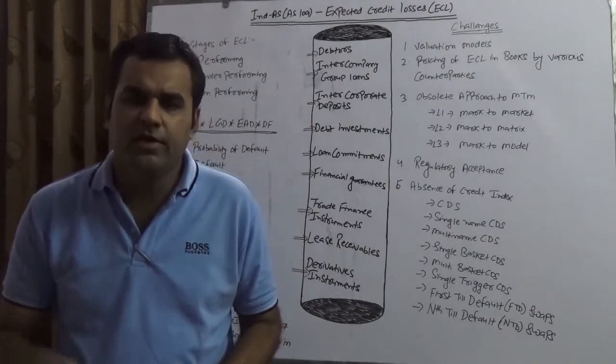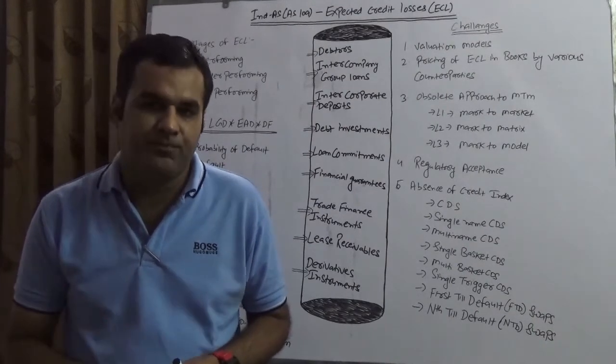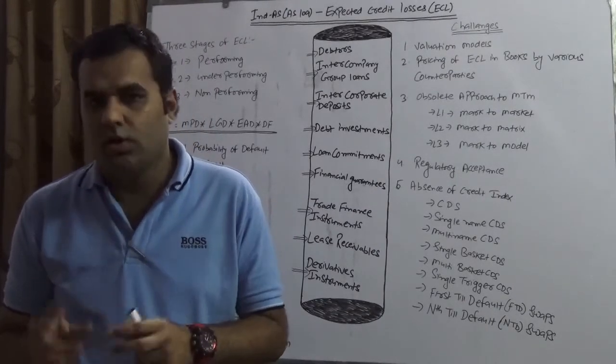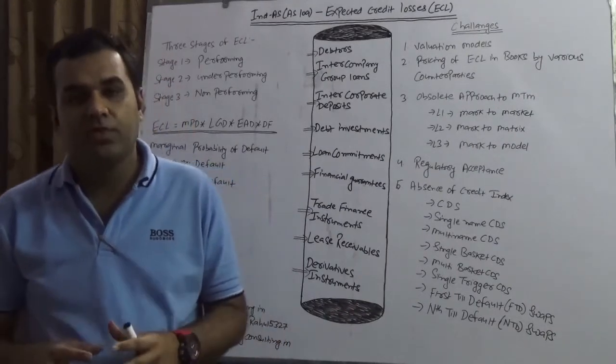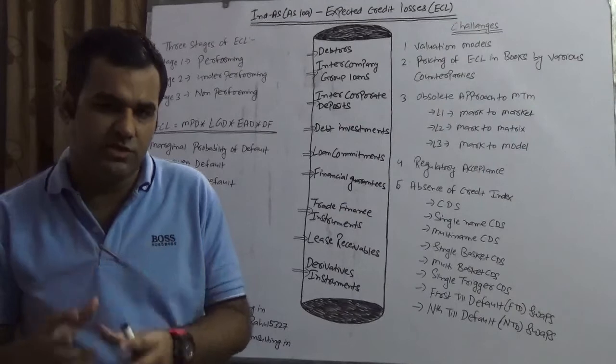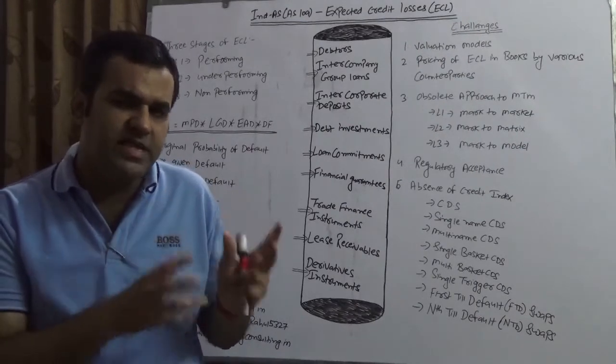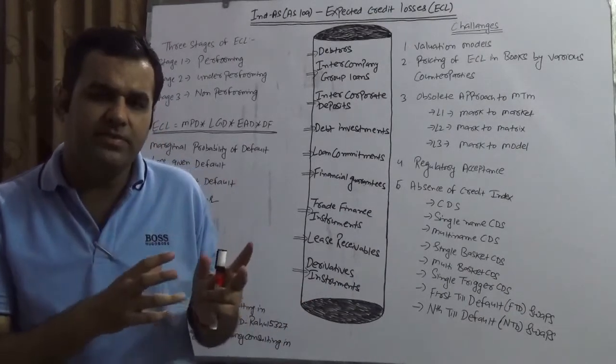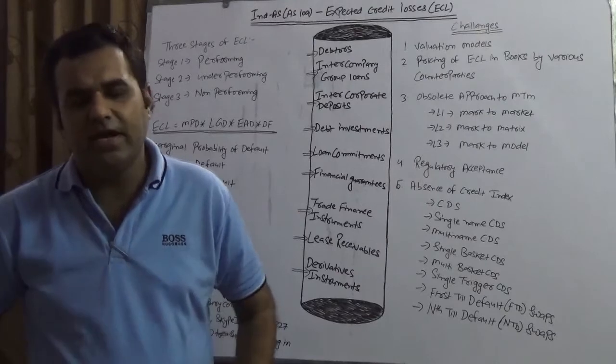But before moving to ECL, I would like to ask a very simple question from everybody: why ECL? Why Expected Credit Losses? Is it only because a regulatory body made the law? Because IFRS 9 is taking ECL into consideration? Does that mean IFRS 9 is exactly right at every place? There is no need for any amendment in IFRS 9?